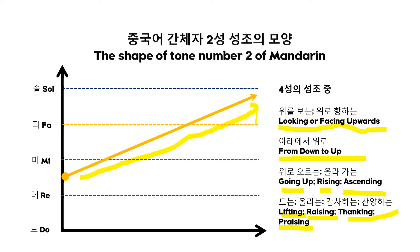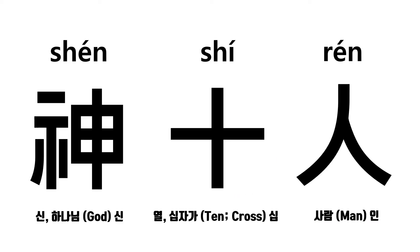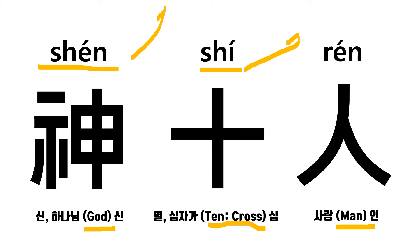Please look at these three characters: God, Ten — the cross — which you have already learned, and Man. These three characters all have the same tone number two. The cross, Jesus Christ, and Man have the same tone number two value.